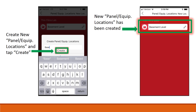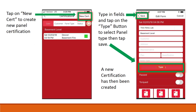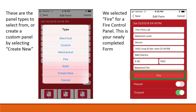Making a certification. Tap on NewCert to create a new panel certification sheet. Fill out the fields in the document. Toggle to the appropriate system and select the system type: Electrical, Control, Mechanical, Fire, Solar, or Create New. Type in the fields and tap on the Type button to select the panel type, then tap Save. A new certification has been created. These are the panel types to select from, or create a custom panel by selecting Create New. We selected Fire for a fire control panel. This is your newly completed form.